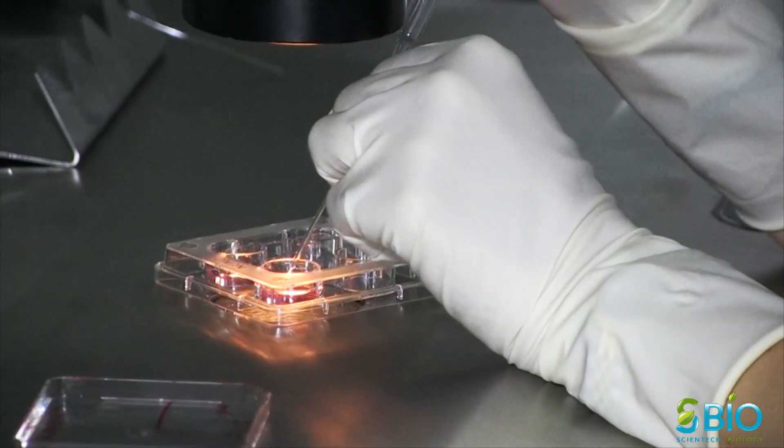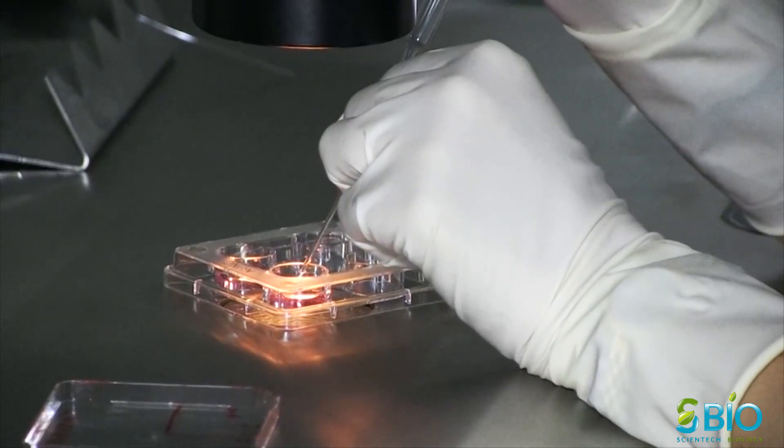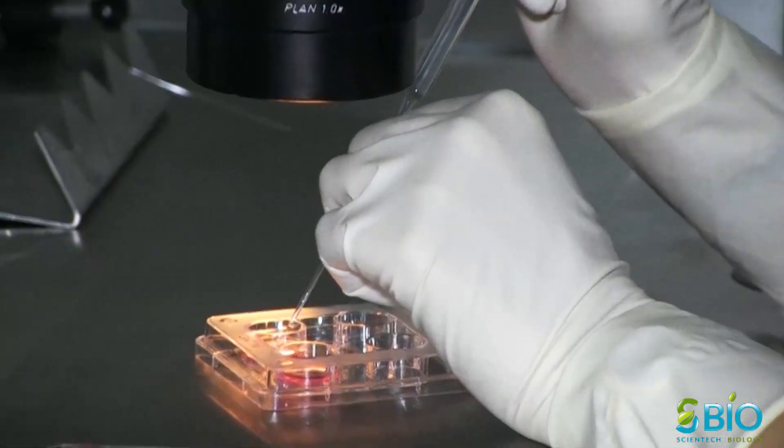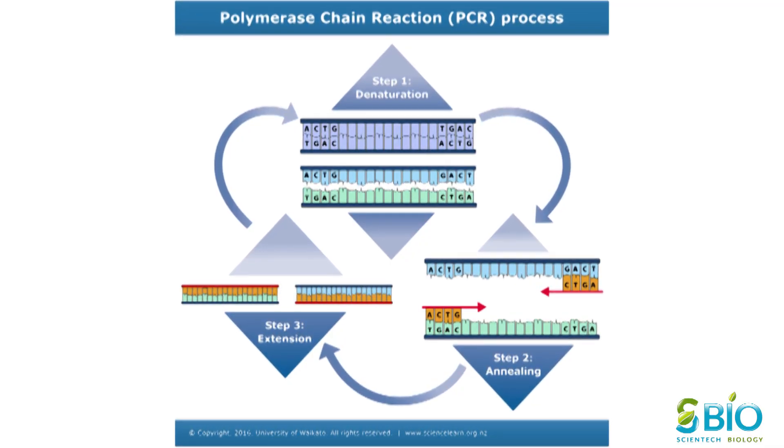PCR involves a process of heating and cooling called thermal cycling which is carried out by the machine. There are three main stages involved in PCR reaction.